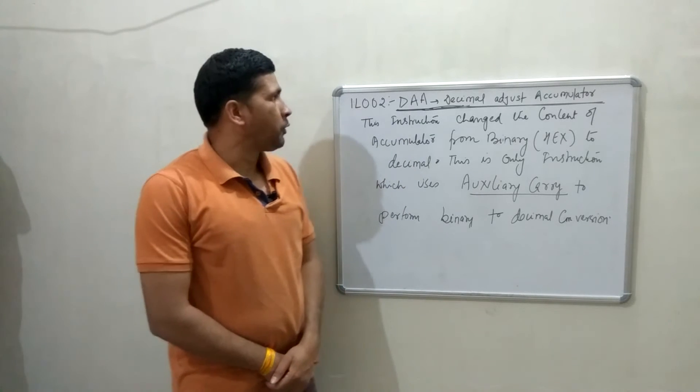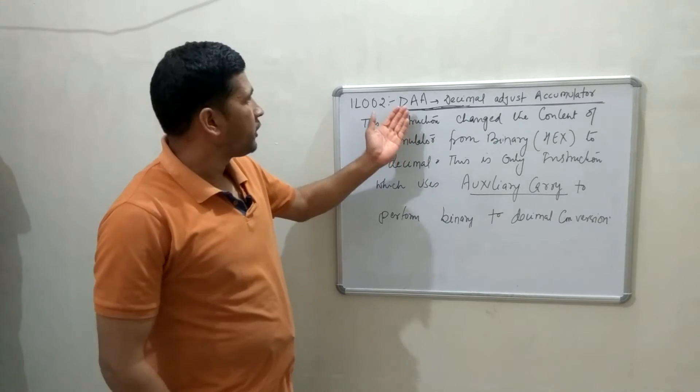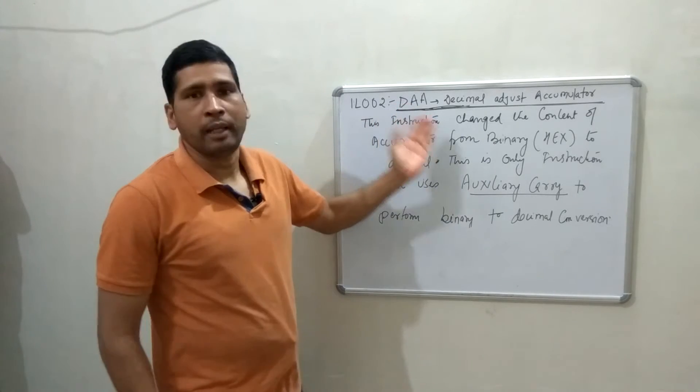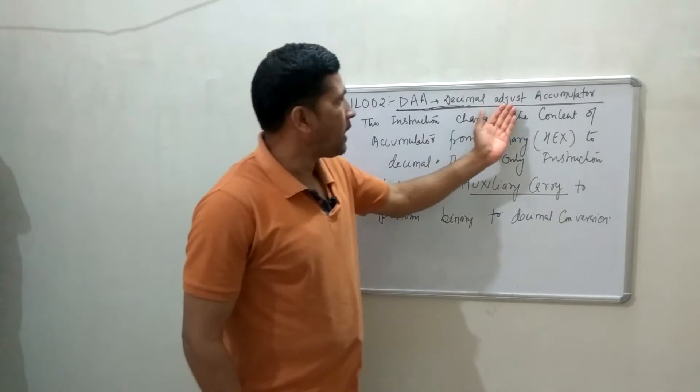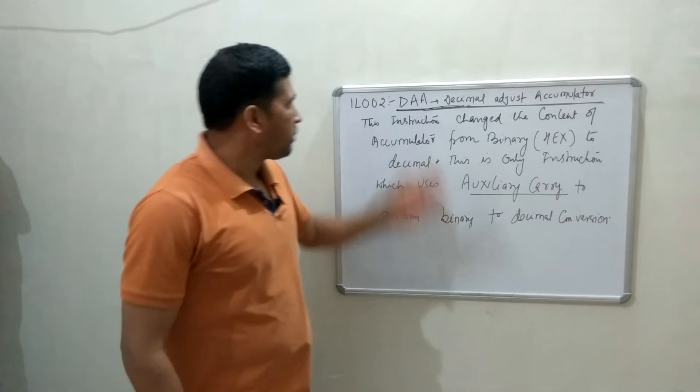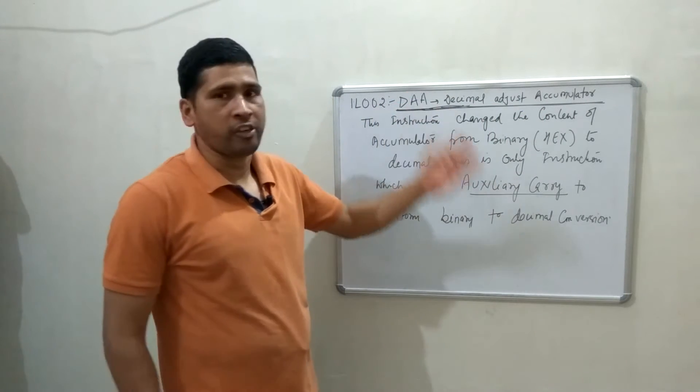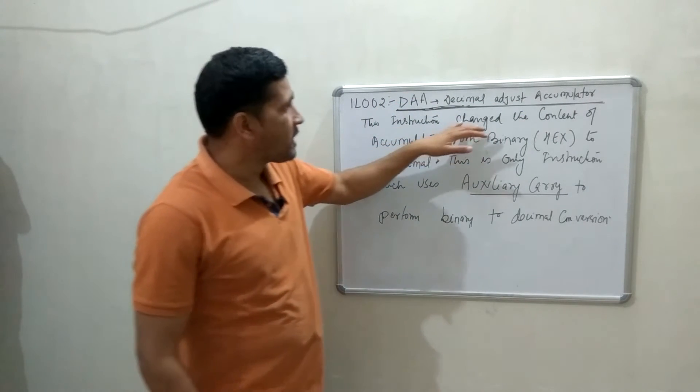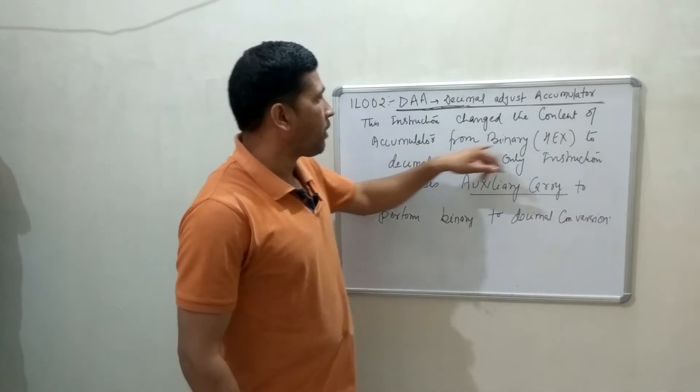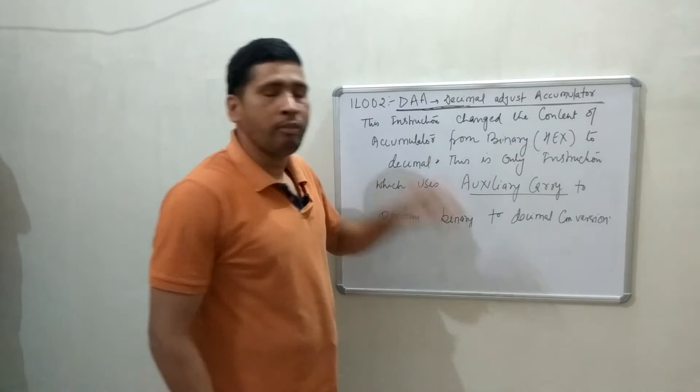Today, in this video, I am going to discuss instruction DAA that is Decimal Adjust Accumulator. Now basically what is the meaning of this instruction? This instruction changes the content of Accumulator from binary to decimal value.